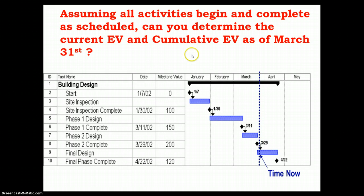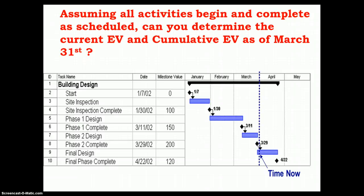Assuming all activities begin and complete as scheduled, can you determine the current and cumulative earned value as of March 31st? By end of March, two milestones have been accomplished: phase 1 completion with a milestone value of $150,000, and phase 2 completion with an earned value of $200,000. The current earned value for this period is $350,000, and the cumulative earned value by March 31st is $450,000, achieved by completing all three milestones.